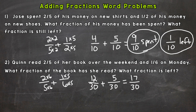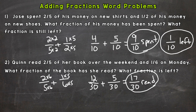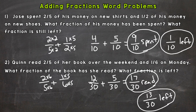Twelve plus five is seventeen, and we keep our denominator of thirty. So she read a total of seventeen-thirtieths. Now we need to figure out what fraction is left — how do we get to thirty out of thirty, or one hundred percent of the book? Thirteen-thirtieths would get us there, since seventeen plus thirteen equals thirty, which is one whole, or one hundred percent of the book.